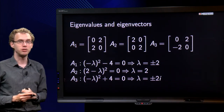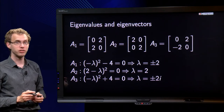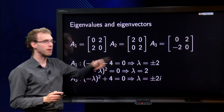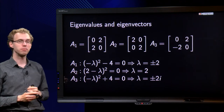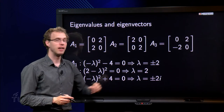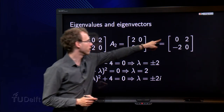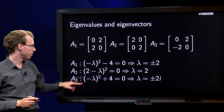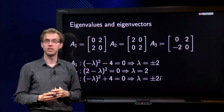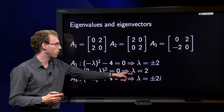For A2 it is even easier — you can read off the eigenvalues straight away. Or if you want, add a minus lambda and then you get 2 minus lambda squared equals 0, so we only have lambda equals 2. And then for the last one, adding minus lambda we get minus lambda squared, but now plus 4 equals 0, so lambda equals plus or minus 2i.